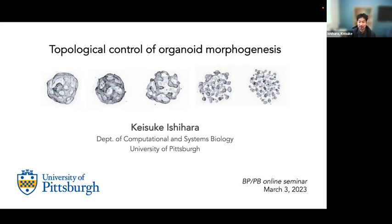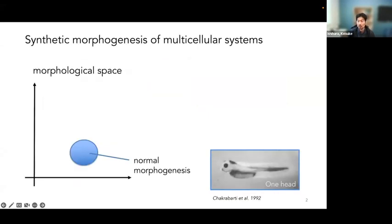Thank you to the series organizers for giving me this opportunity. My name is Case K. I just moved to Pittsburgh in December to start my lab at the University of Pittsburgh. Today I'll be talking about my postdoc work that was just published last year on topological control of organoid morphogenesis.